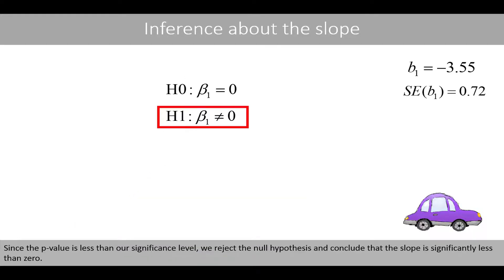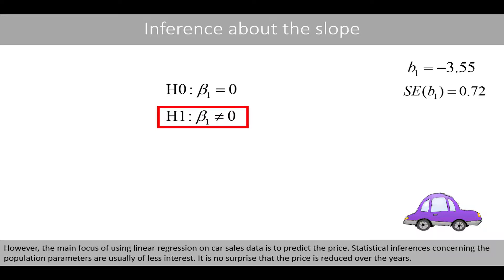Since the p-value is less than our significance level, we reject the null hypothesis and conclude that the slope is significantly less than 0. However, the main focus of using linear regression on car sales data is to predict the price. Statistical inferences concerning the population parameters are usually of less interest. It is no surprise that the price is reduced over the years.